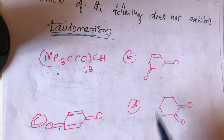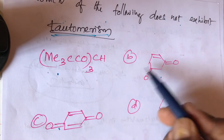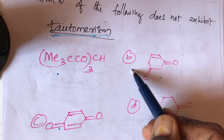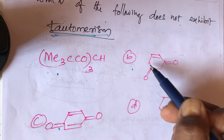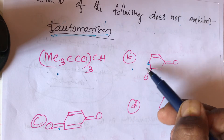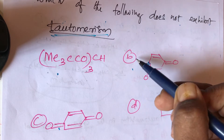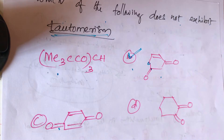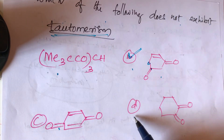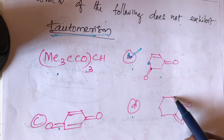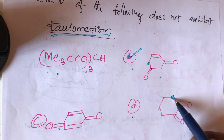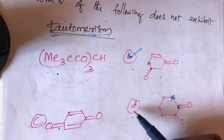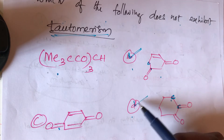Looking at compound B, there is a keto group beside an alpha carbon, and this alpha carbon also has alpha hydrogen, so it is also participating in tautomerism. What about compound D? This keto group is beside an alpha carbon, and this alpha carbon has an alpha hydrogen, so it is also participating in tautomerism.